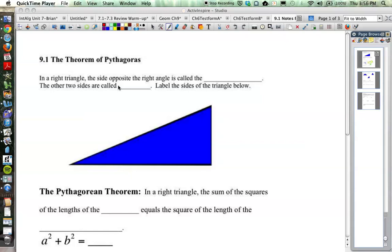Today we're starting chapter 9, which is on the Pythagorean Theorem. This is going to be a review, at least in part, for some of you as you remember the Pythagorean Theorem from last year. But we're also going to add a few things to it, so there will be some new material that you will need to know.